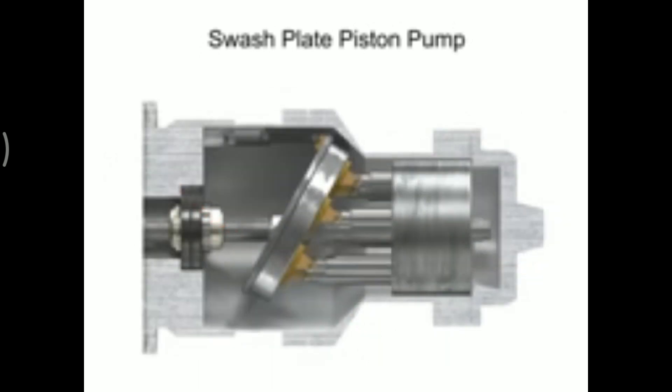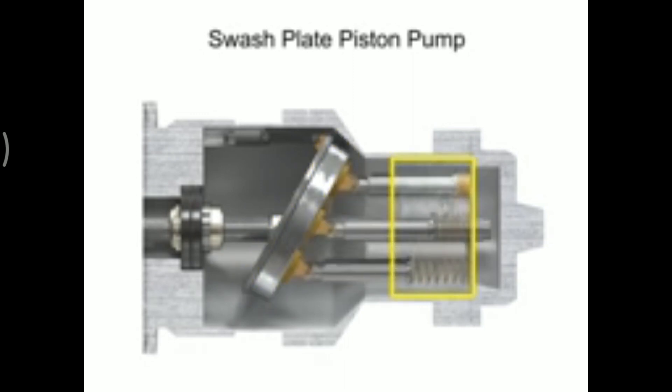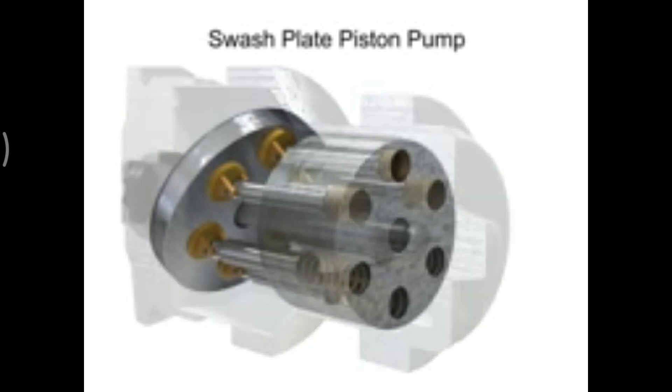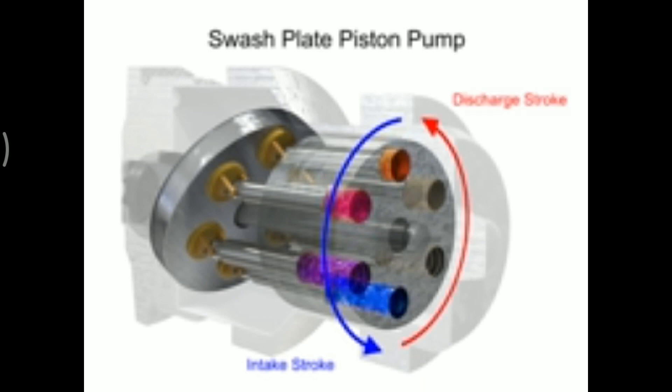As the shaft rotates, the pistons move against the swash plate, causing them to reciprocate within the piston block. The pistons create a vacuum that forces fluid in during half a revolution, and expels fluid during the other half.